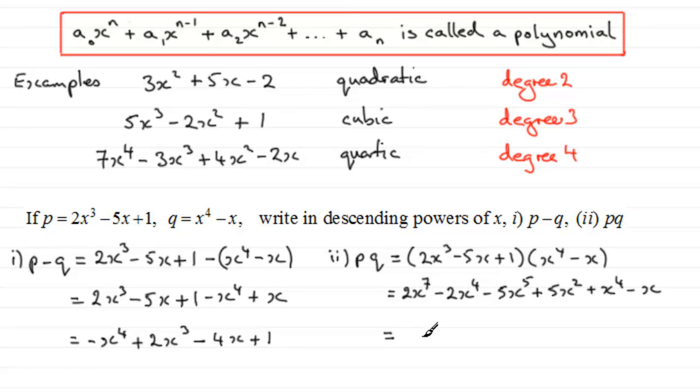Now we just need to group this all together and write it in descending powers of x. We've got just this term in x to the power 7 - that's the highest power, so 2x to the power 7 leads. Then we've got minus 5x to the power 5. Then we come down to x to the power 4 terms: minus 2x to the power 4 plus x to the power 4, so it's going to be minus x to the power 4. We've got no cubic terms. We've got x squared terms: 5x squared, so that's plus 5x squared. And then we've just got the x term, minus x, and no constant on the end. So there's our polynomial of degree 7.